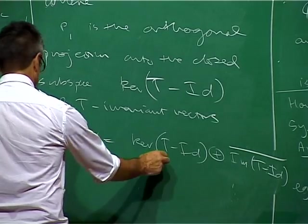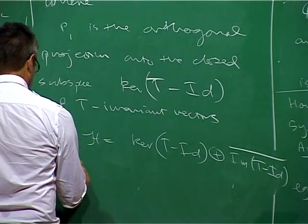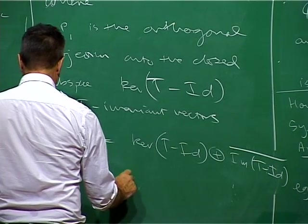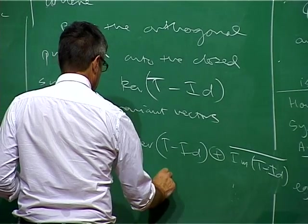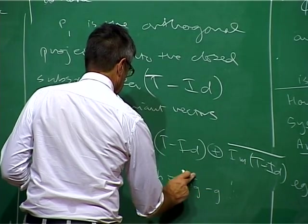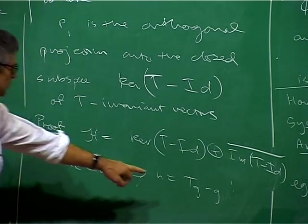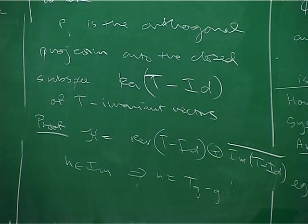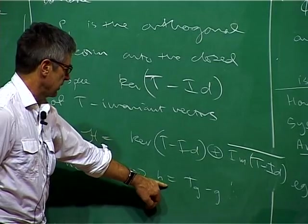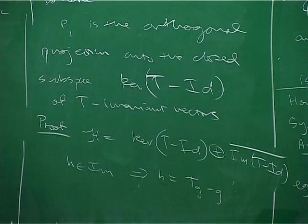Okay, these guys in this kernel here... If H is in the image, then you can write H equals TG minus G for some G in L2, and then if you apply this sum here to TG minus G, there's a telescoping sum. And so, in fact, it's very easy then to see that everything in the image is actually killed by these AN vectors in the limit.